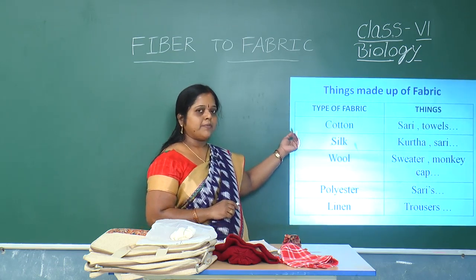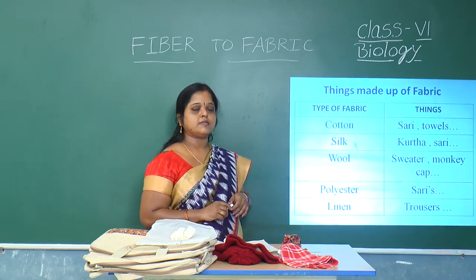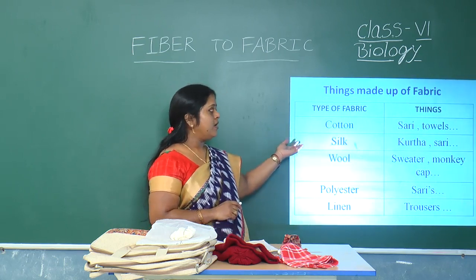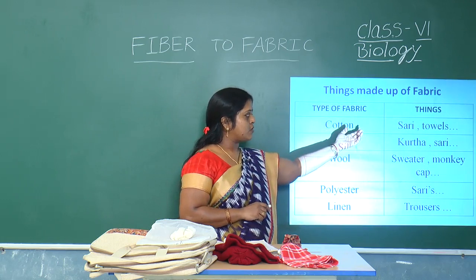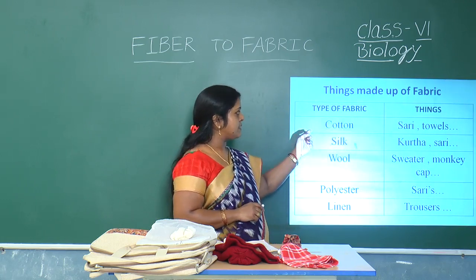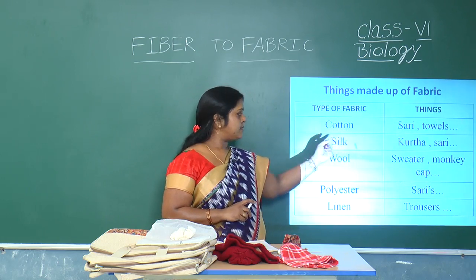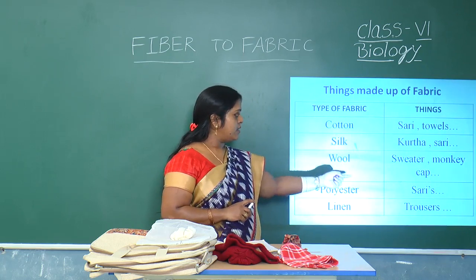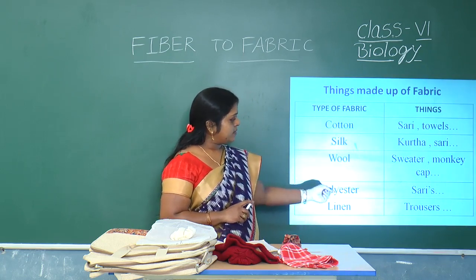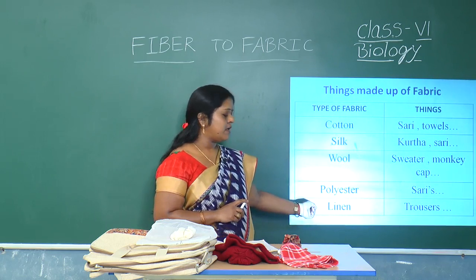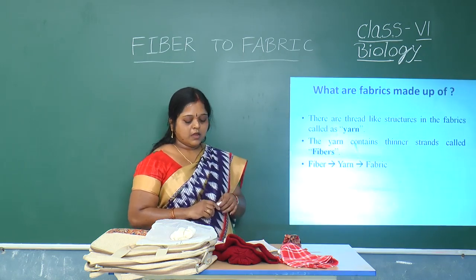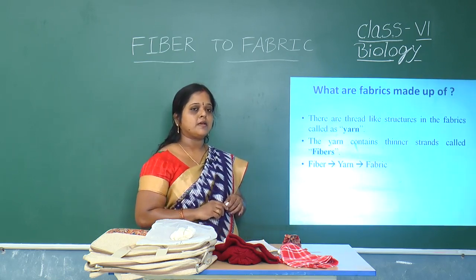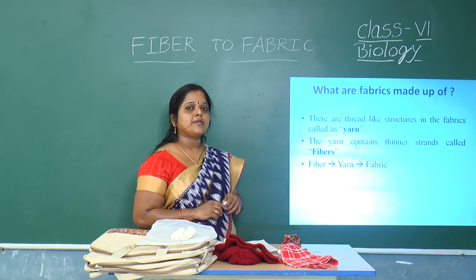Things made up of fabric. In our house we use different varieties of cloths which all come under different types of fabrics. For example, most people use cotton cloths; cotton sarees and towels come under cotton fabric. Kurtas and sarees come under silk fabric. Sweaters and monkey caps come under woolen fabric. Sarees come under polyester fabric. Trousers come under linen. Cotton fabrics are heavier than silk. Silk fabrics are lighter, and woolen fabrics are very much heavier.